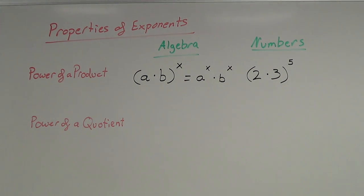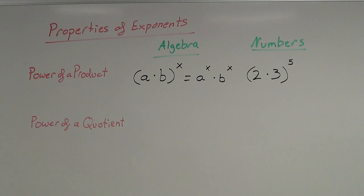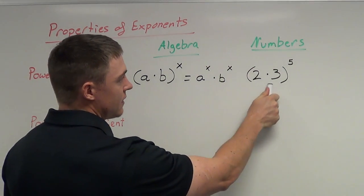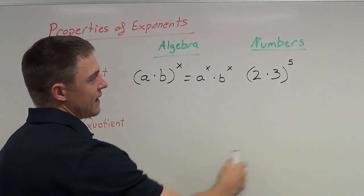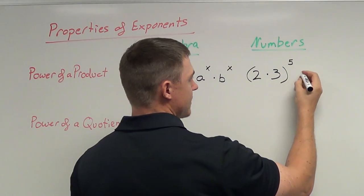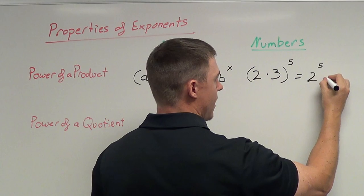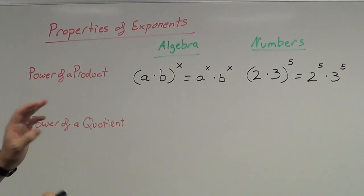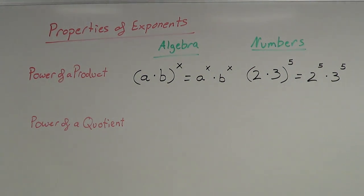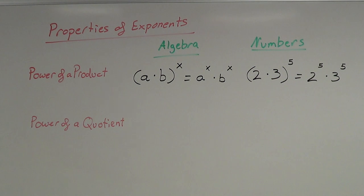What we're doing is showing a different method of simplifying this. This method is usually used when you have variables — a lot more variables than what we have here. So to do this example with numbers: if I have a power being applied to a product, I can take this power and distribute it to the two terms inside. This is going to be equal to 2 to the fifth power times 3 to the fifth power. From there you can evaluate — plug that into a calculator. That is the power of a product.